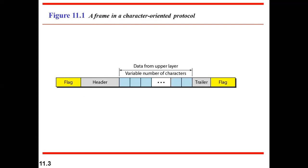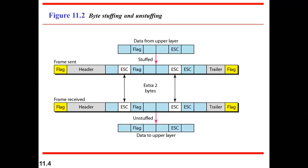The process of inserting characters to separate frames is called byte stuffing. A problem arises when you are sending not just text but also videos, audio, or multimedia files. In that case, the special character used as a flag may also appear in the data itself. If the same character exists in the data, the receiver may mistake it for an end-of-frame delimiter.